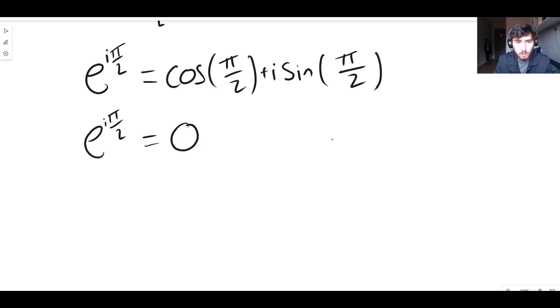So it's zero plus i times, and then what's sine of pi on two, what's sine of 90 degrees? Well, it's just one. So it's i times one because sine of pi on two is one. So it's zero plus i.